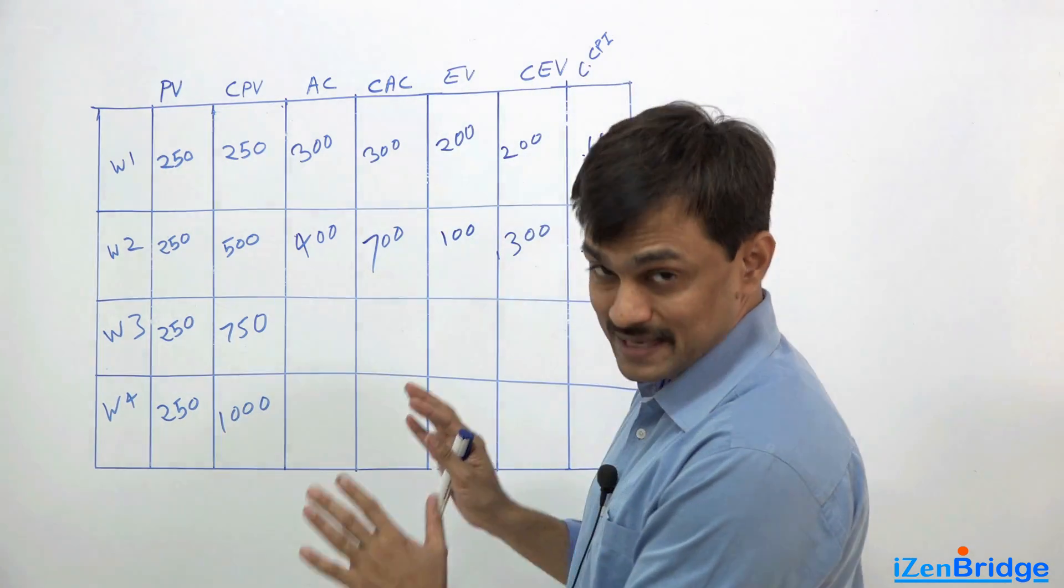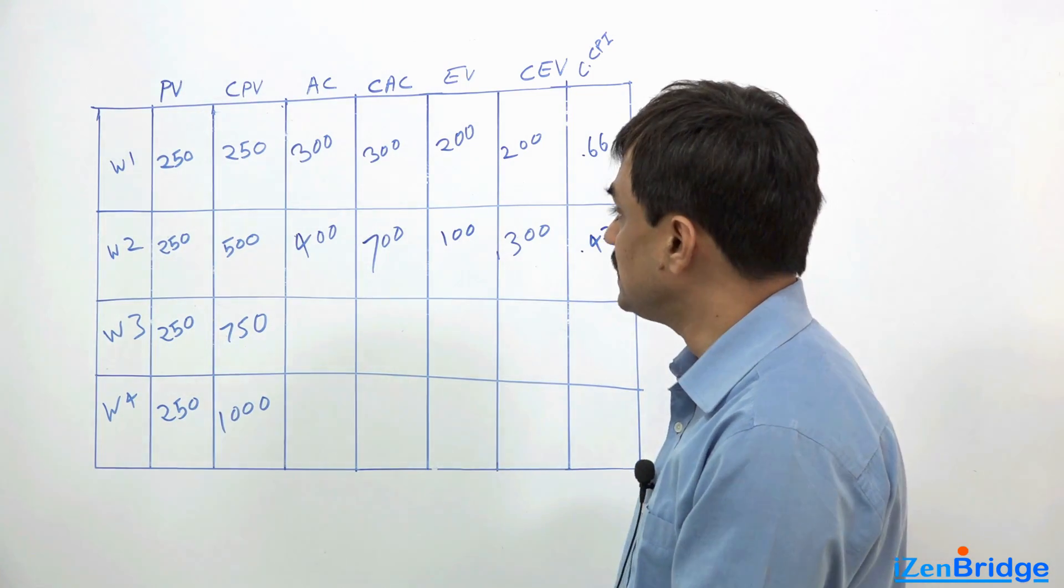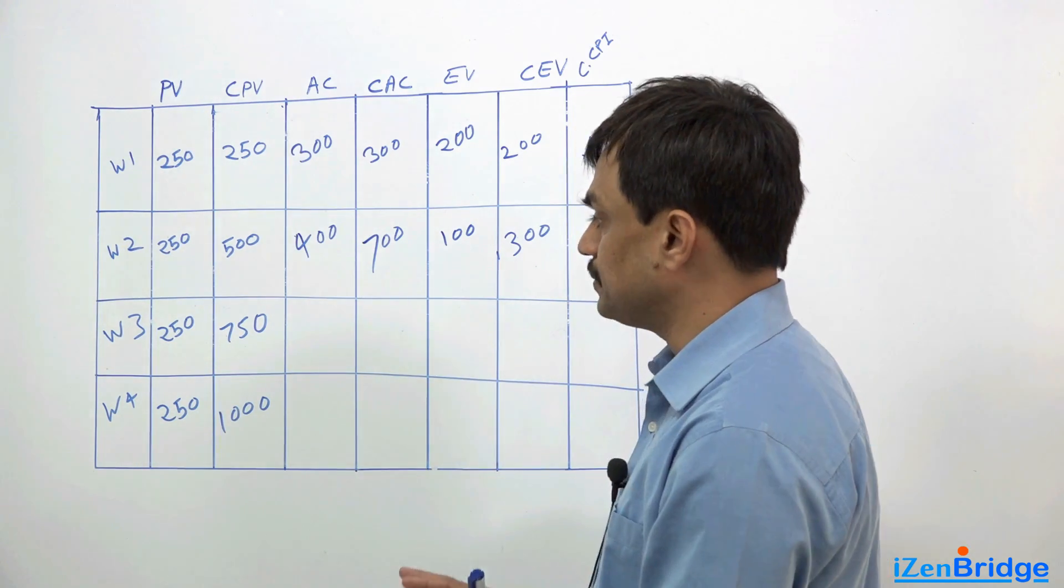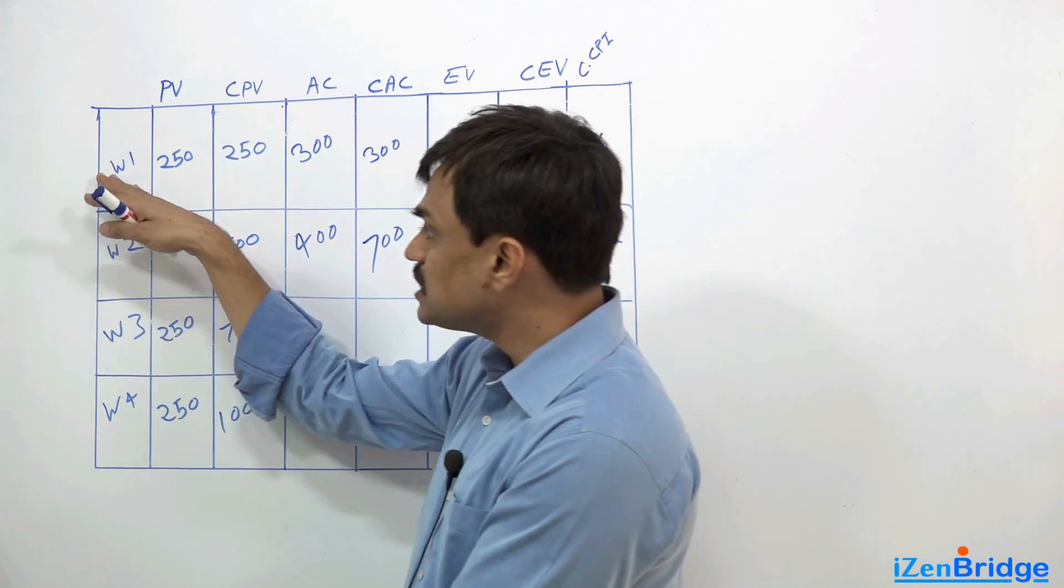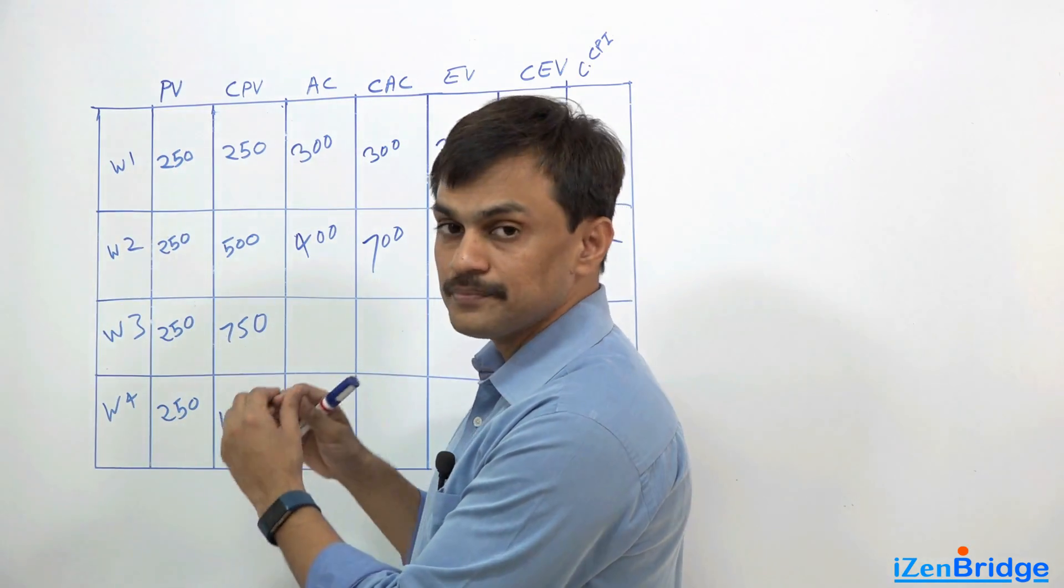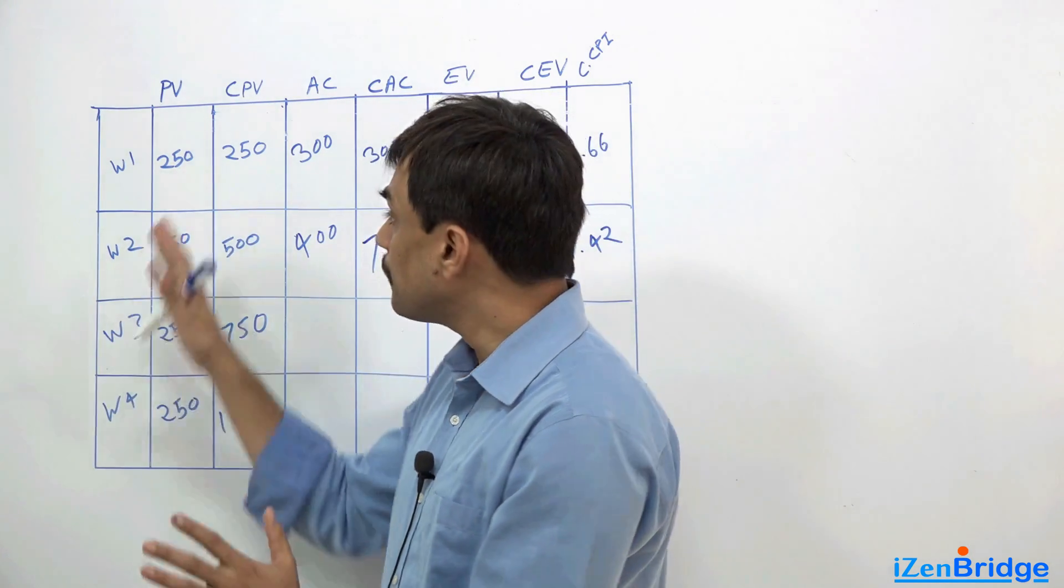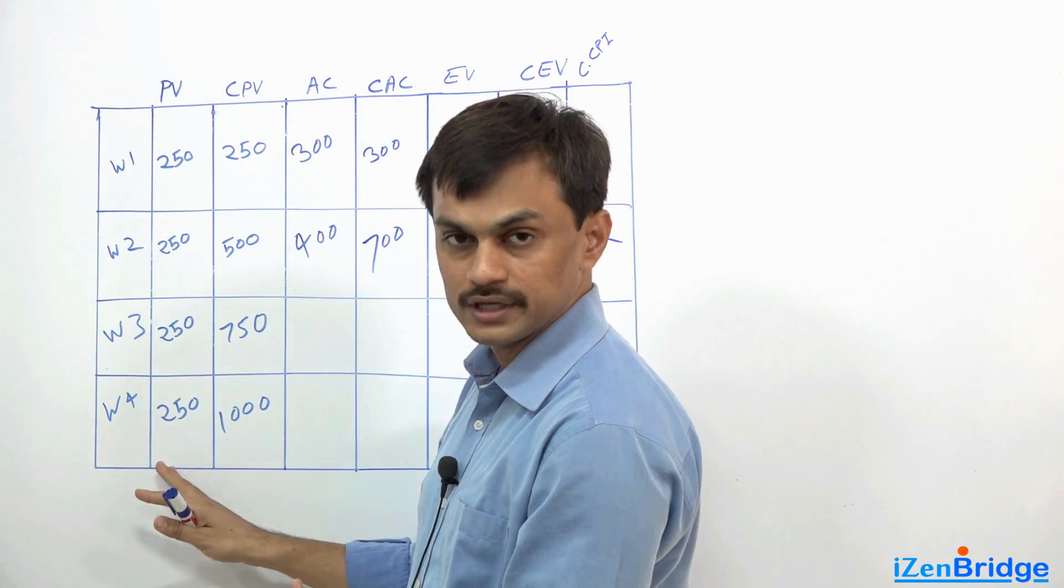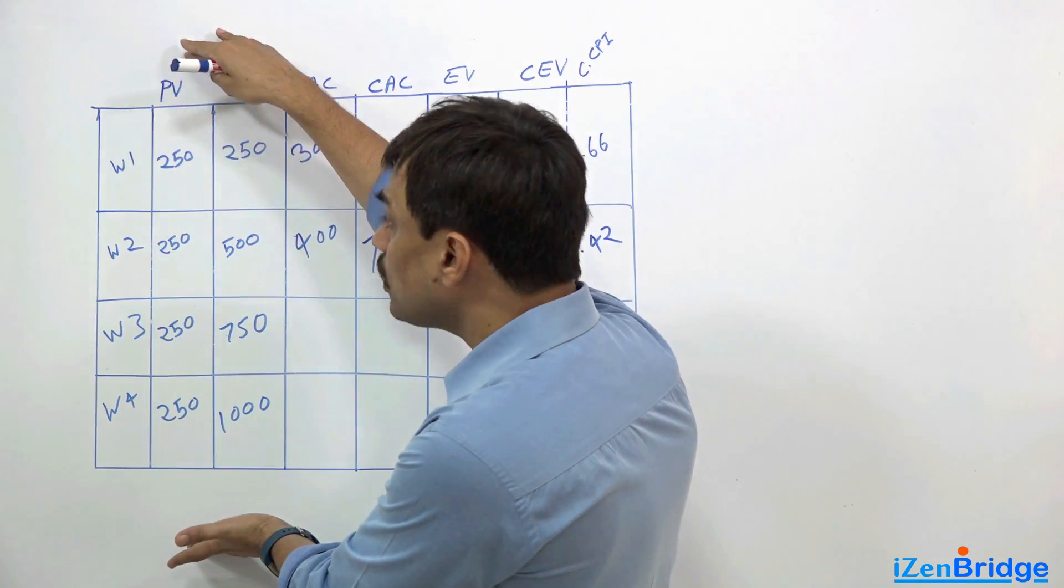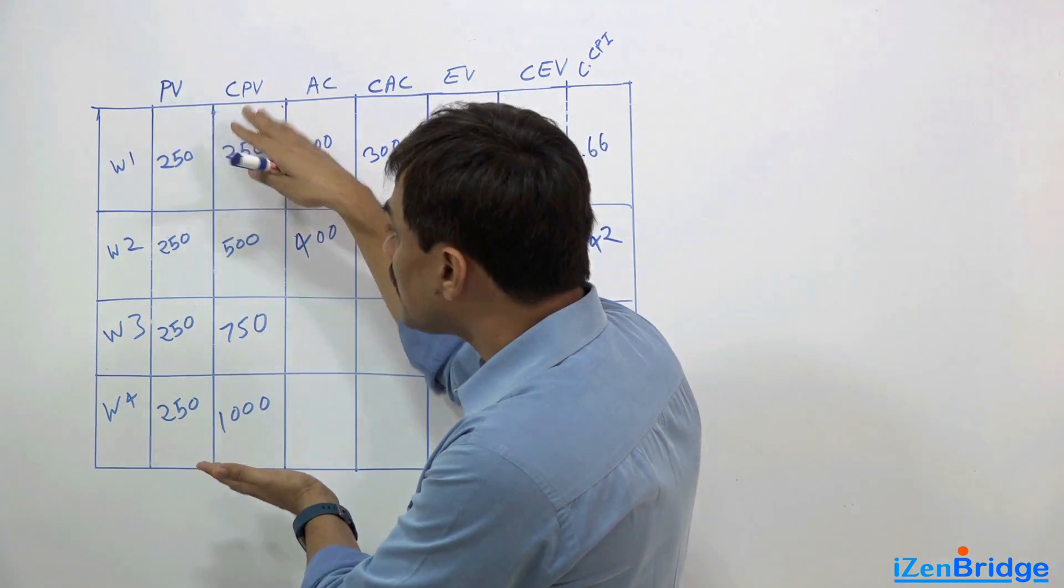Before getting into the details of this formula, I want to give you some numerical example and then we can calculate the To Complete Performance Index. In this particular example, I have taken a case where the project duration is for 4 weeks and we are expected to do the work of $250 per week.